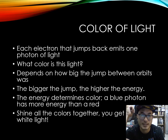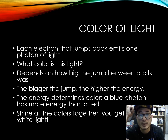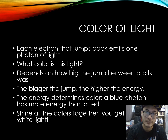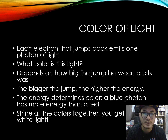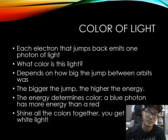So what is the colour in light? It depends on how big the jump between orbits was. The bigger the jump, the higher the energy. The energy determines colour. A blue photon has more energy than a red one. If you shine all colours together, it will create white light.